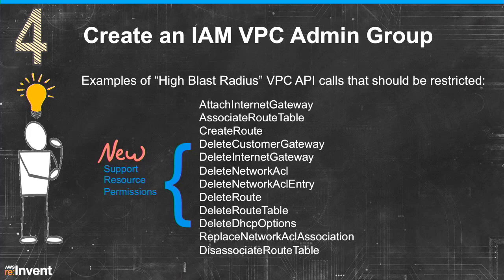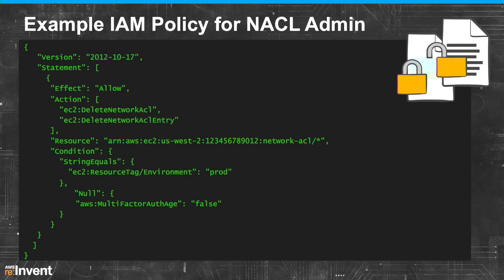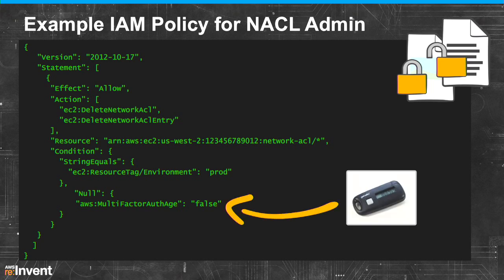The delete rules are now enabled for resource permissions as EC2-based resource permissions roll out, allowing very granular IAM policies. For example, you can restrict delete network ACL actions only to ACLs tagged with environment=prod. For extra security, you can also require an active multi-factor authentication token before executing the action. So even in the management console, without MFA you would not be able to execute the rule.